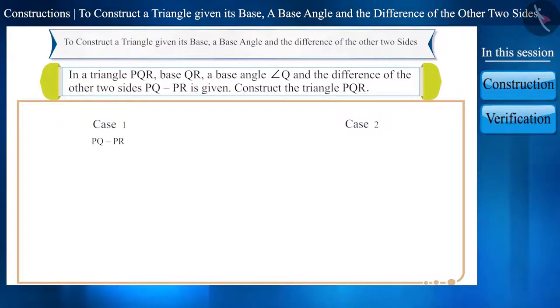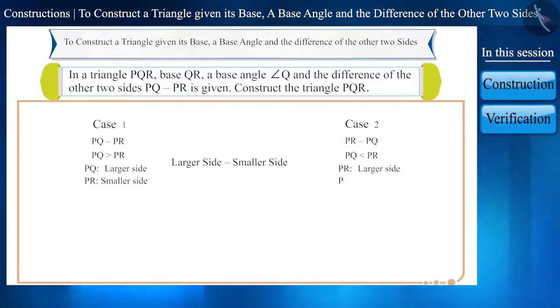Friends, can you tell what is the difference between PQ minus PR and PR minus PQ? We know that in order to find the difference, the smaller side is deducted from the larger side. Hence, we can understand that if the value of PQ minus PR is given, then in such a case side PQ is big and the side PR is smaller. Similarly, if the value of PR minus PQ is given, then the length of the side PR will be big and the length of the side PQ will be small.